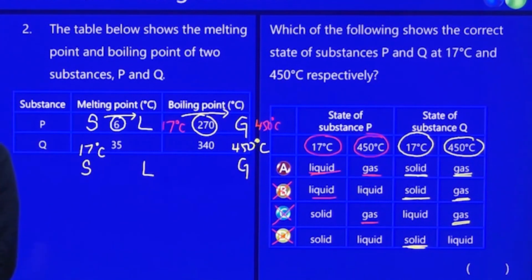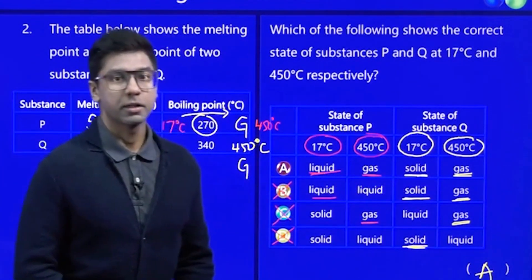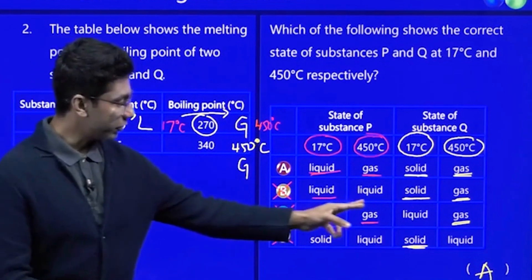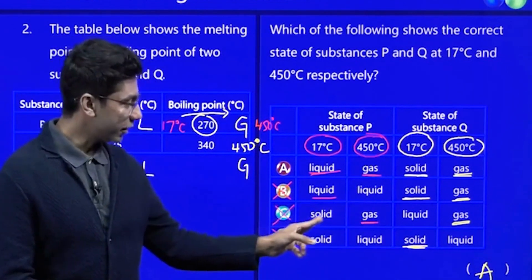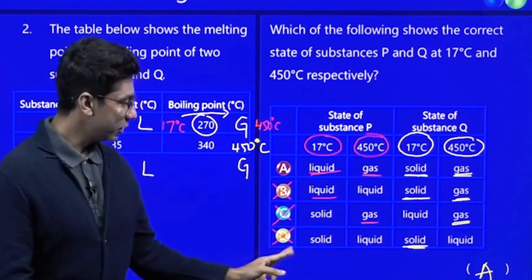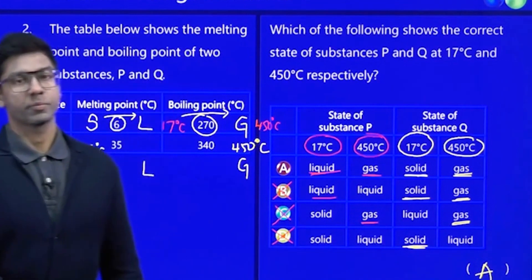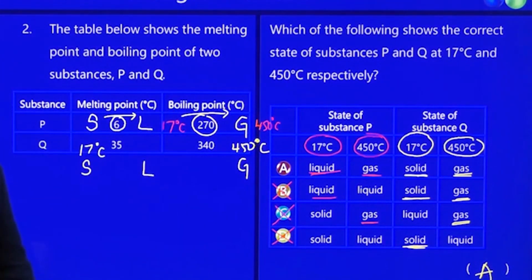Hence, we are clear that option A is the right answer when we have underline, underline, underline, underline matching all. Obviously B, you have one missing, C, you have two missing lines, D, you have three missing lines. So not possible. Clear?